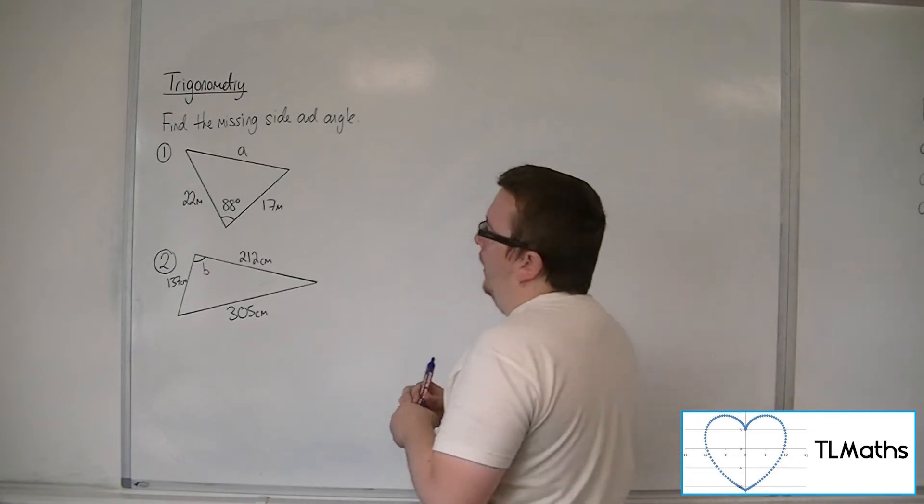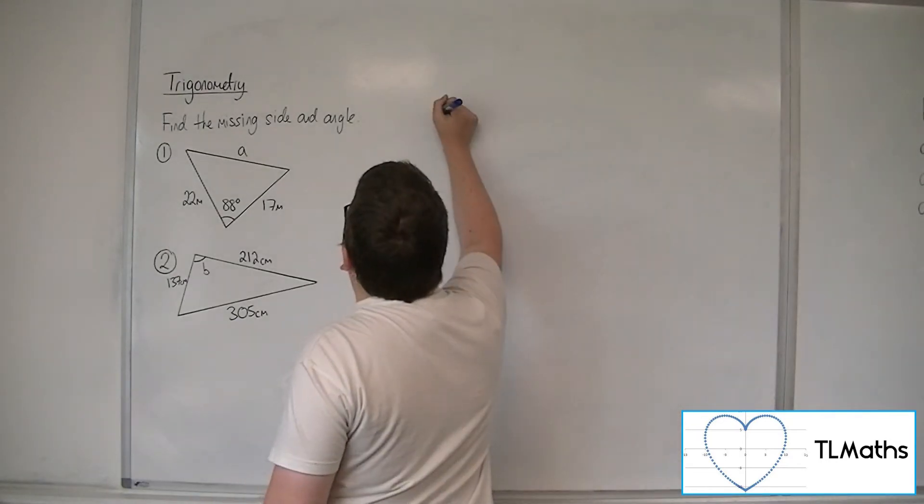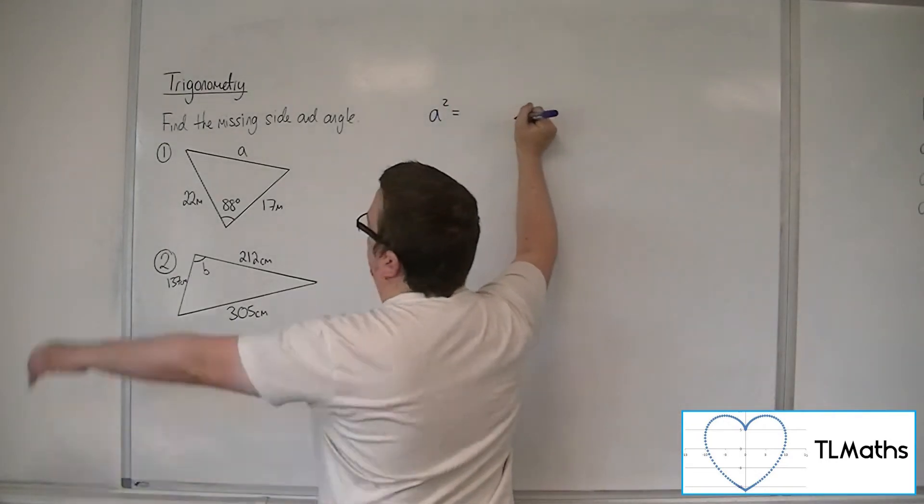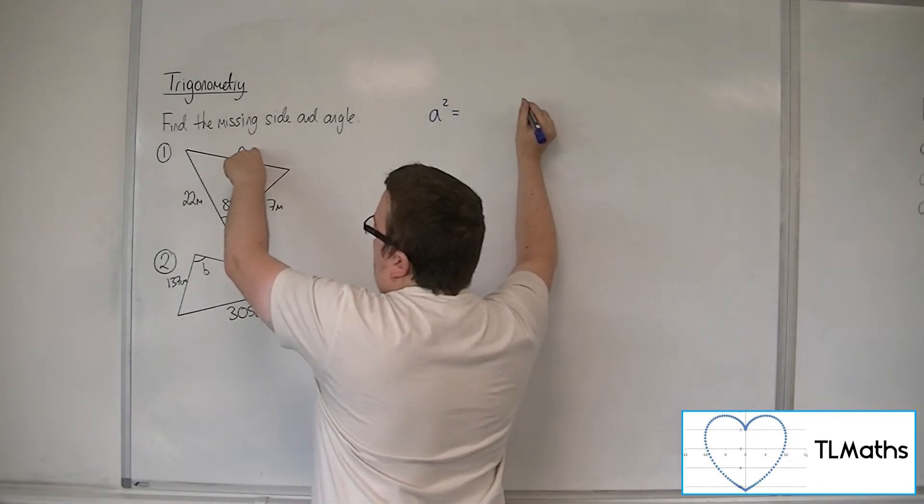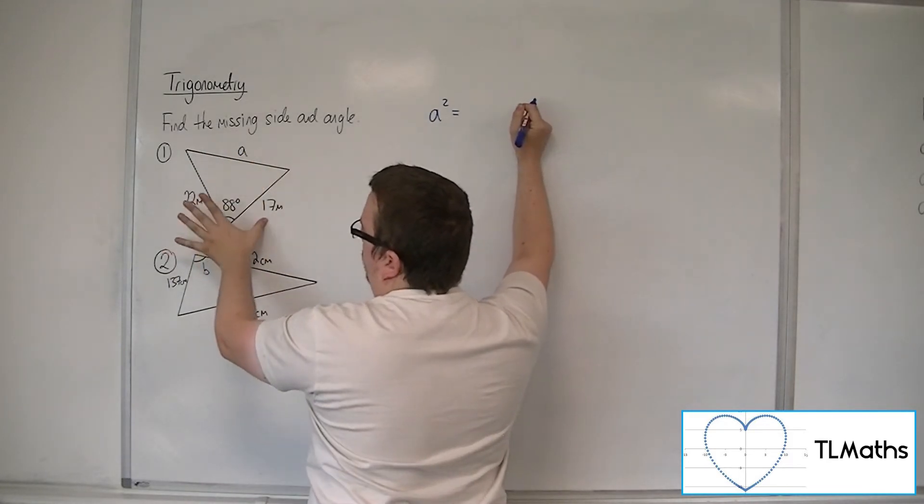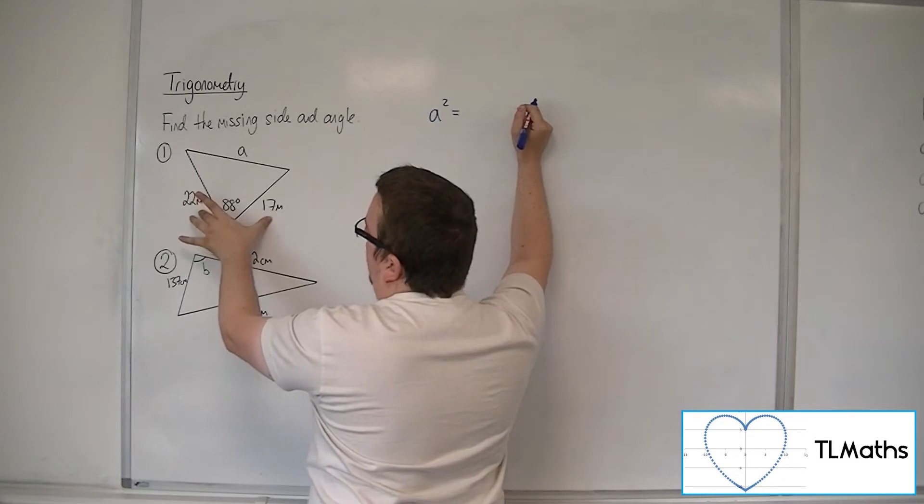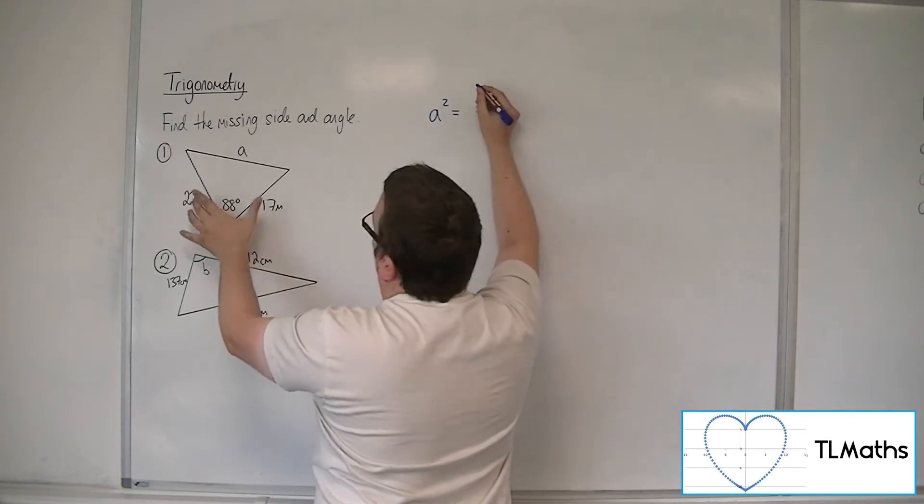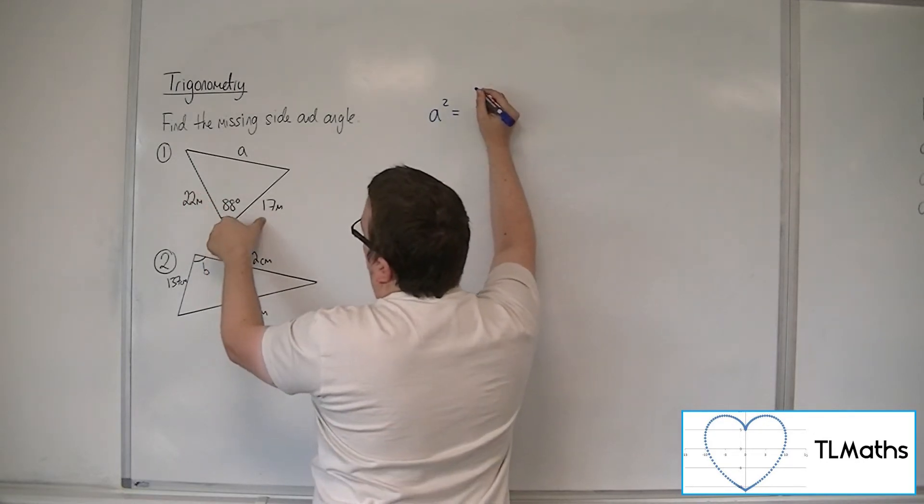So for this first one, we have that A squared, so this side squared is equal to - now either of these could be B and C, it doesn't matter which. So let's go with 22 is B, 17 is C.